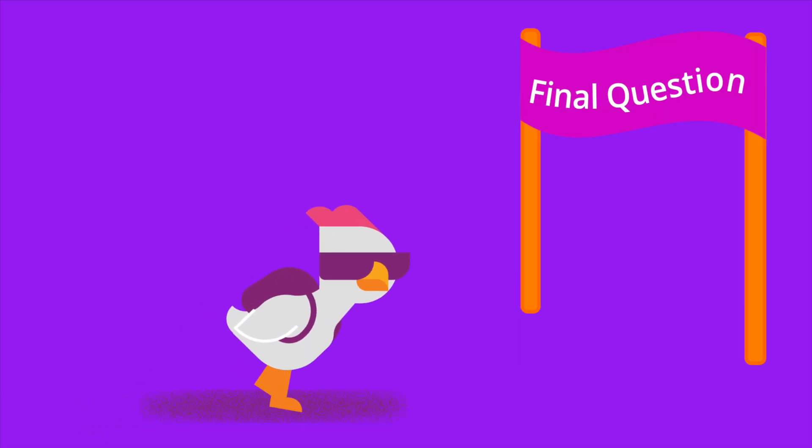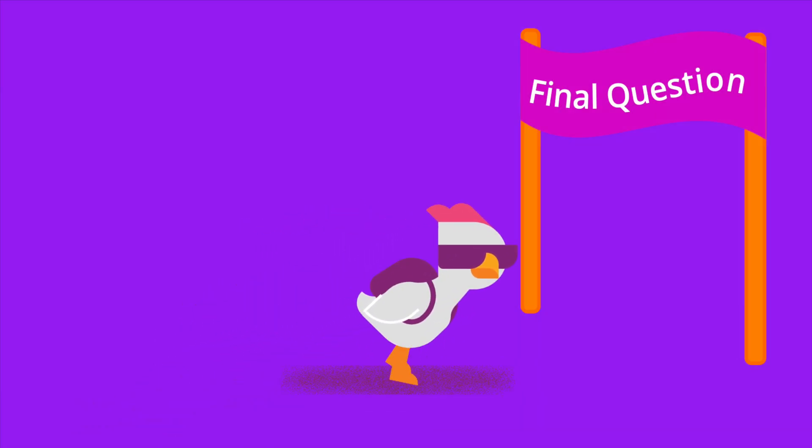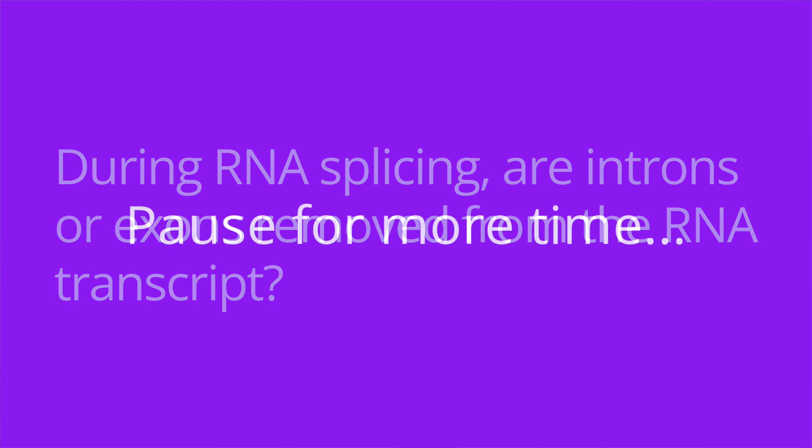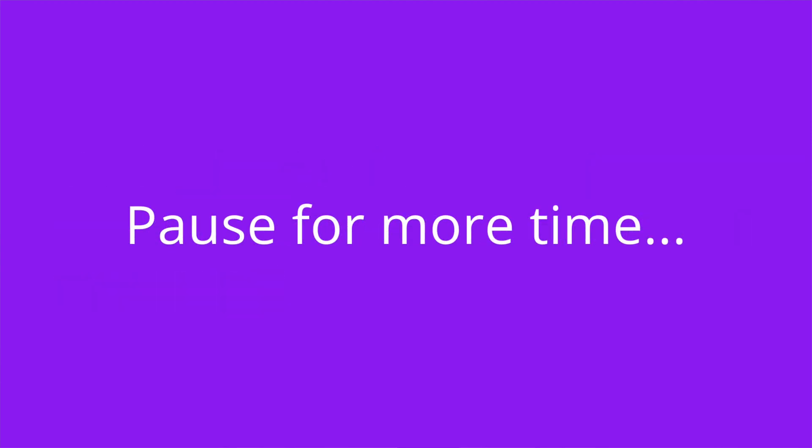Question number four: during RNA splicing, are introns or exons removed from the RNA transcript? The answer is introns.